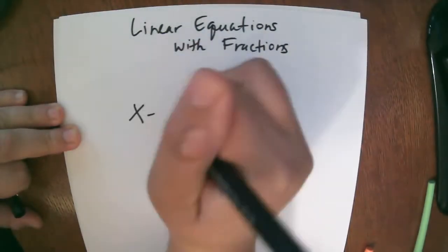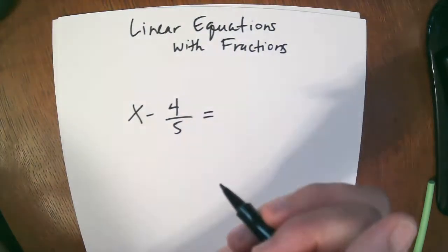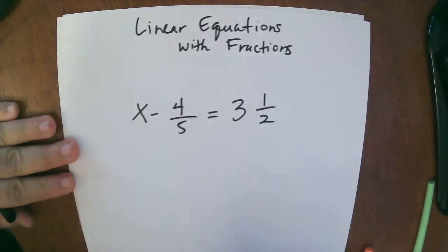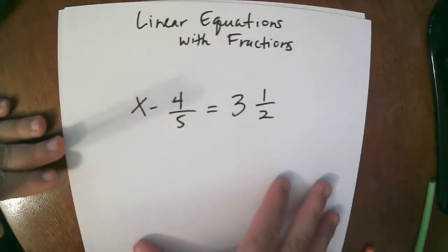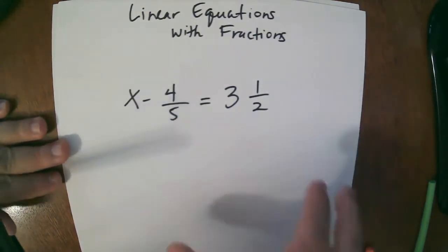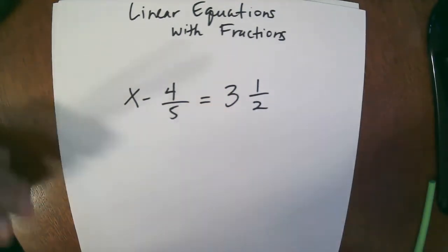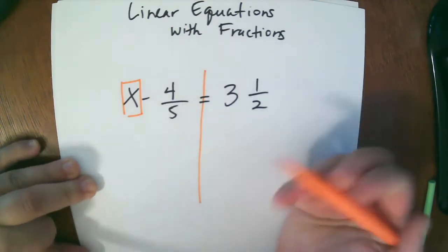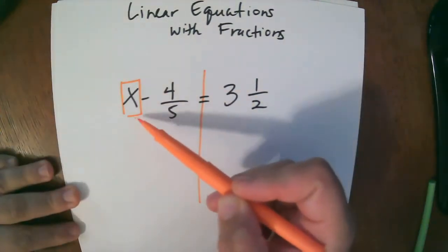We have x minus 4 fifths equals 3 and 1 half. So this is where we're really going to combine everything we know about fractions to an equation. So we're going to go ahead and box our variable, draw our wall similar to our other linear equations and we still have the same goal and our goal is to isolate the variable.